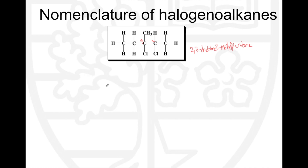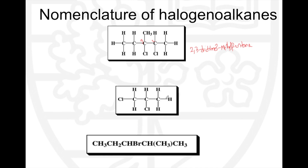Moving on to another structure: we count from left to right because the chlorines are attached to the first and second carbons — we want to give them the smallest possible numbers. So: one, two, three. It is 1,2-dichloropropane.